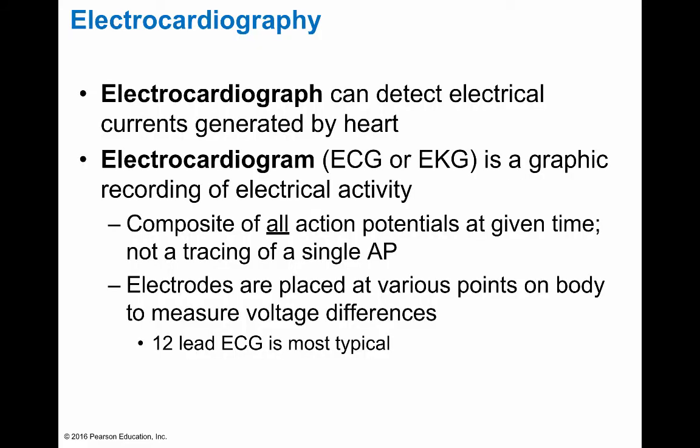An electrocardiogram can detect electrical currents generated by the heart. An ECG or EKG is a graphic recording of this electrical activity — it is the composite of all action potentials at a given time, not a tracing of a single action potential. Electrodes are placed at various points on the body to measure voltage differences, with 12-lead ECGs being the most typical.